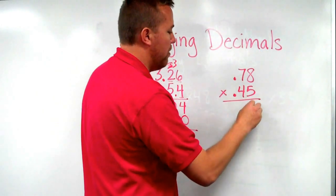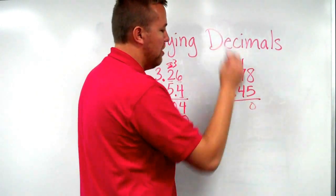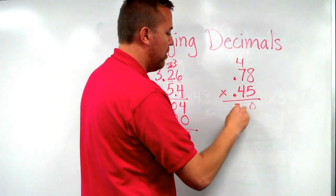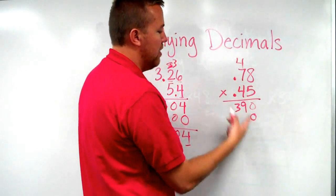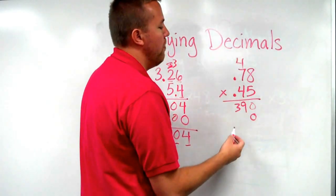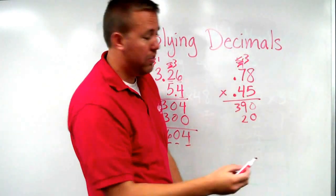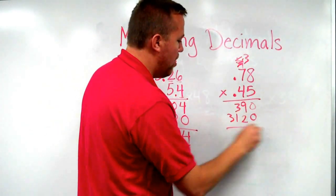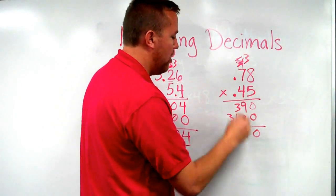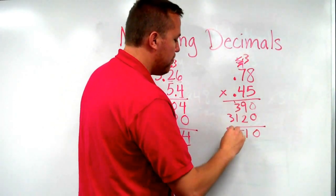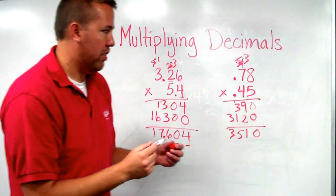Starting here, five times eight is forty. Five times seven is thirty-five, plus four is thirty-nine. Bring down the zero. Four times eight is thirty-two. Bring up the three. Four times seven is twenty-eight, plus three is thirty-one. Adding just like normal.